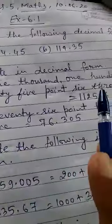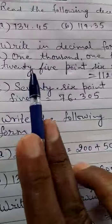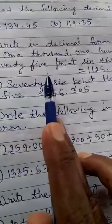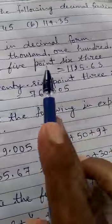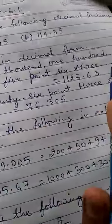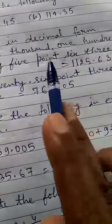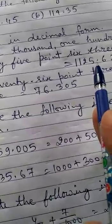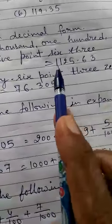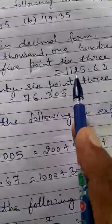Now question number 2: write in decimal form. One thousand one hundred twenty-five point six three. You have to write this into decimal form. First of all, write the whole number part 1125, then put the decimal point, and after that write 63. So 1125.63 is written in numbers like this.